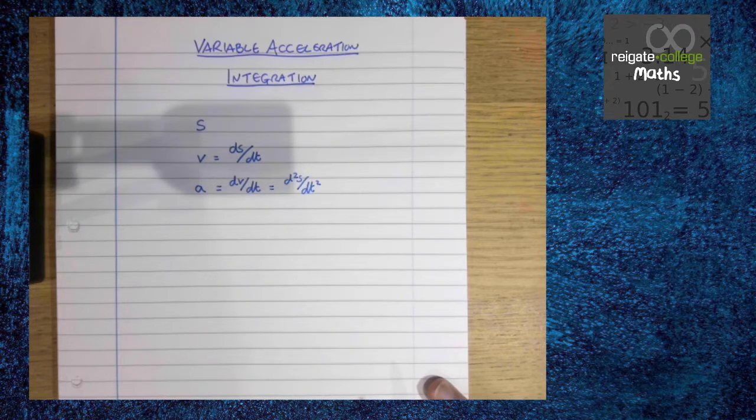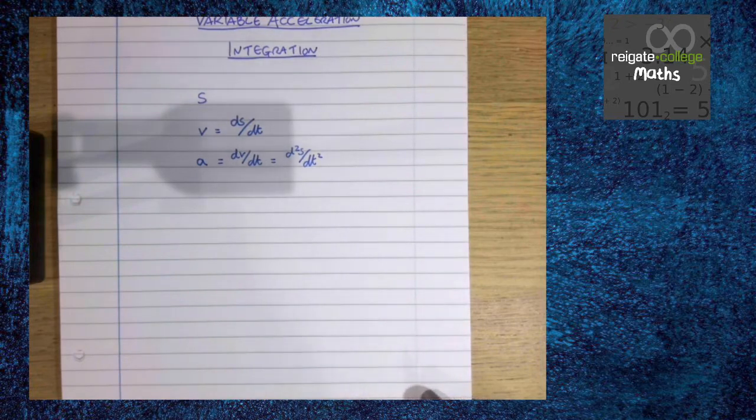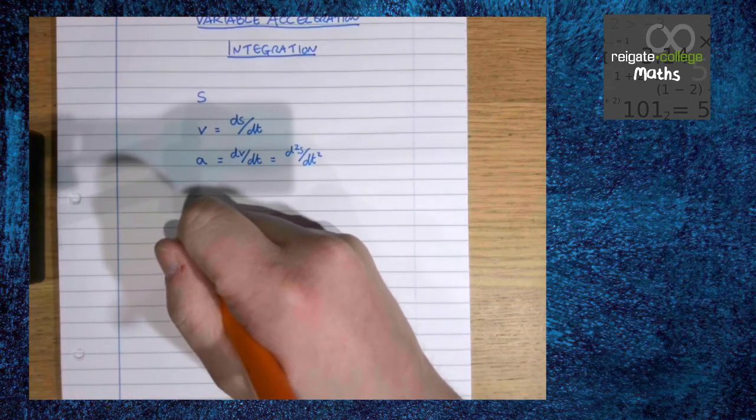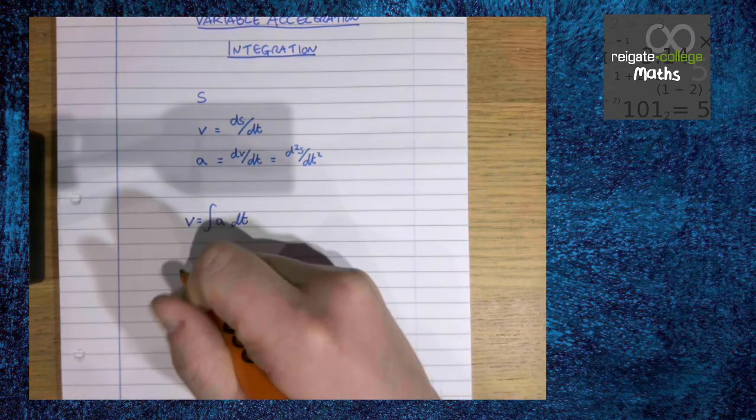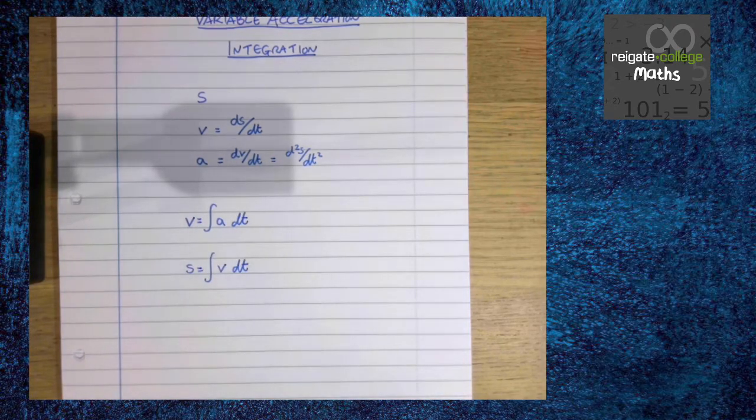As we know from the work on calculus you've done previously, integration is the reverse of differentiation which means that this process works backwards. So we know that velocity is the integral of acceleration and displacement is the integral of velocity. We are going to be having constants of integration and we're going to use boundary conditions such as the initial velocity and displacement to calculate our constant of integration.